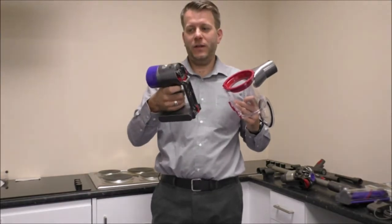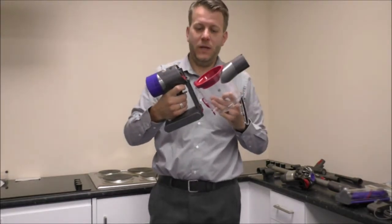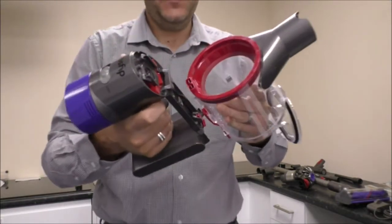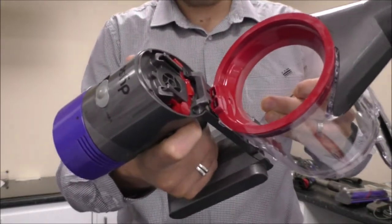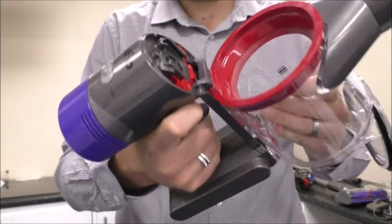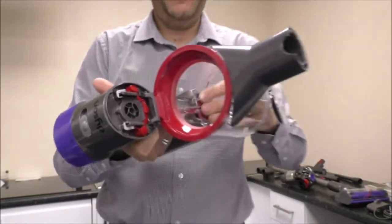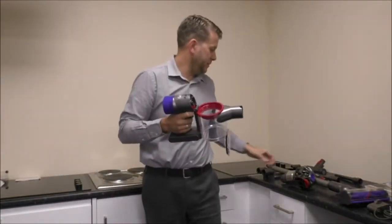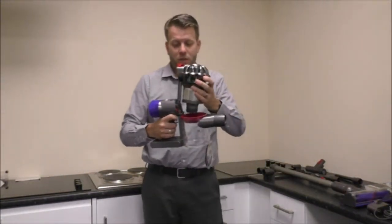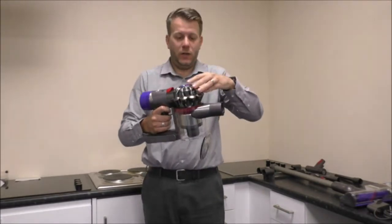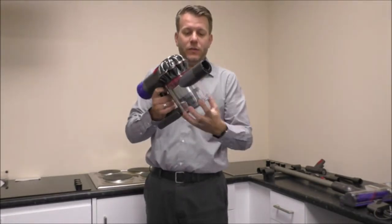You can't really do a lot else with that. I'll show you the filter in a moment but to pull that back together all you would do is just locate that back in there, that clicks back into place, this top part will just locate there and then you can close the bin.